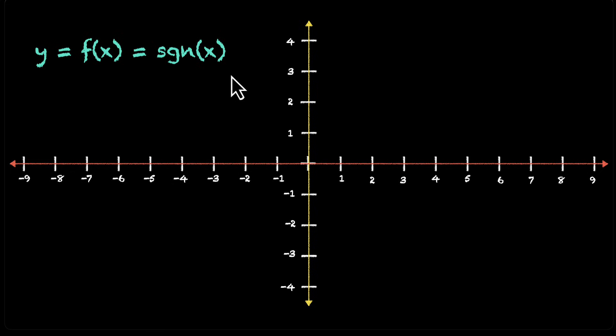Alright, so how do we draw this? Well, we know that if we put any positive value, we'll always get 1. So it'll be sort of a straight line, a constant function. In this first quadrant, this is what we get. I have deliberately left out 0 because for 0, it's defined differently.